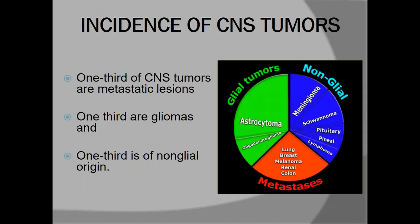Coming to the incidence of brain tumors: one third of brain tumors are usually metastatic, and metastatic tumors are the most common brain tumors in adults. When talking about primary brain tumors, gliomas are the most common. Other types include meningioma, schwannoma, pituitary tumors, spinal tumors, and lymphomas.